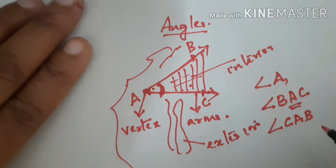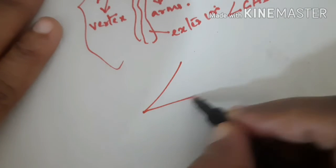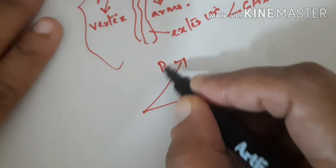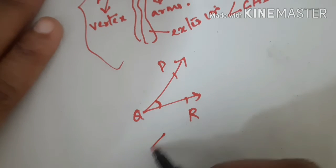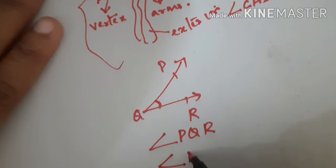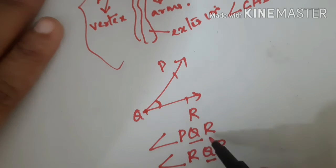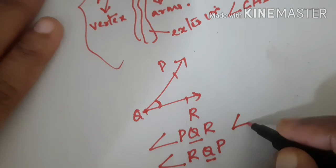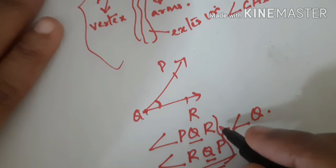See another example. You can simply write the angle as angle Q, or using three letters as angle RQP. The vertex Q must be in the middle; the other letters you can interchange. When you go to higher classes you prefer to write using three letters.